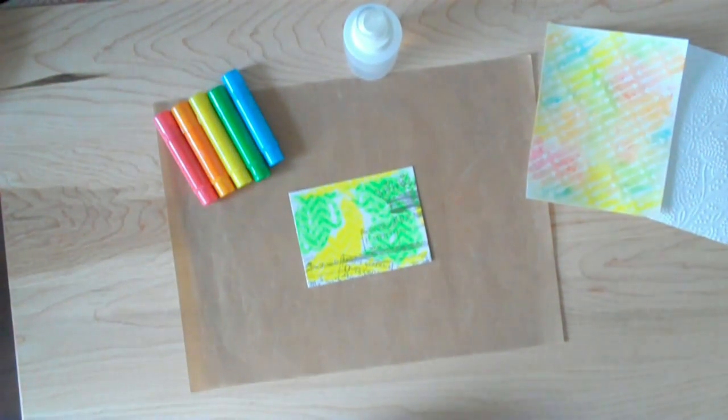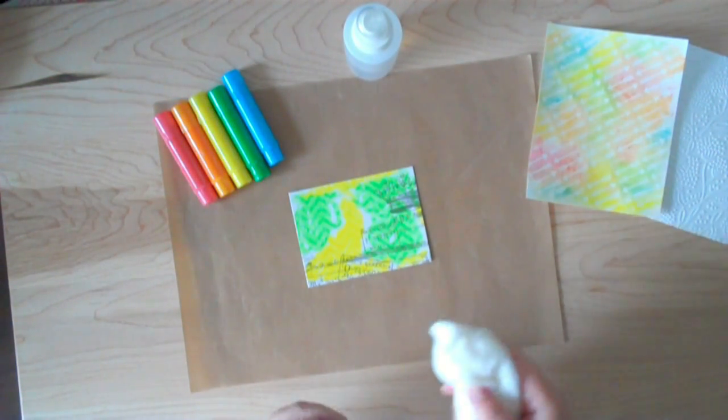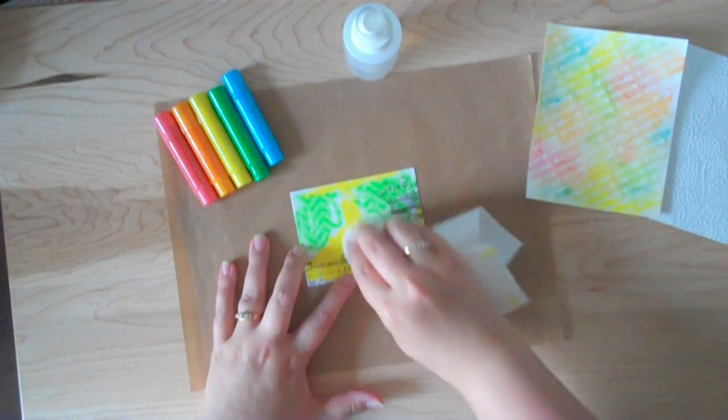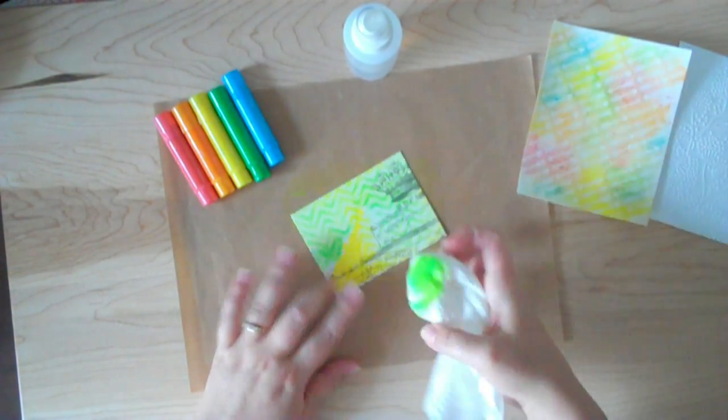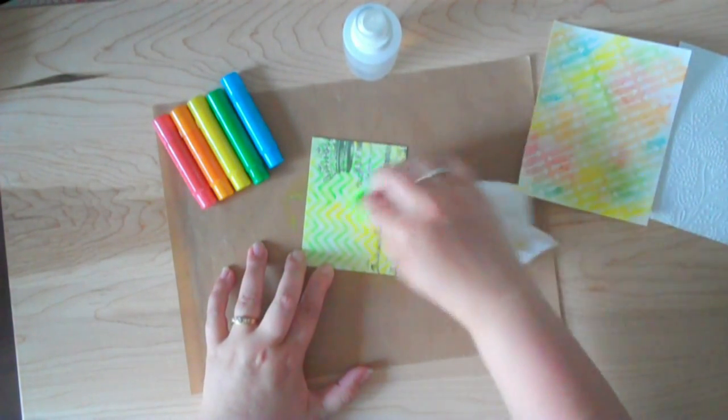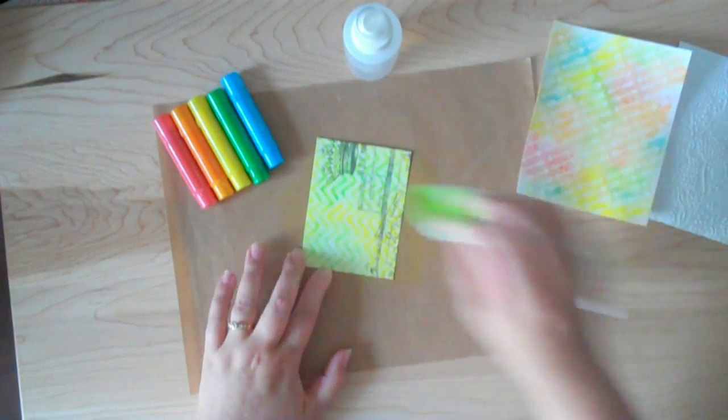To blend this, I could use my hand if I want to, but I'm going to use a little bit of a damp paper towel. Again, just gentle circular motion. And there we go.